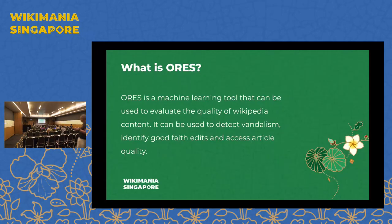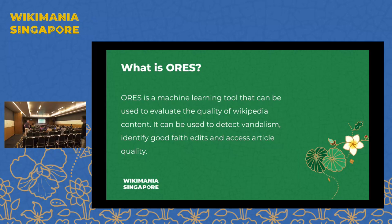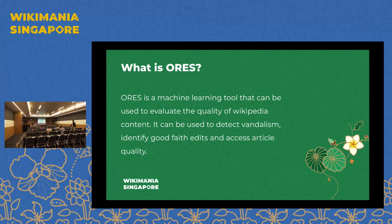For people who are new to machine learning tools with regards to content quality and improving content quality on a Wikimedia project: ORES is basically a machine learning tool that helps to improve the content quality on Wikipedia and other Wikimedia projects. It helps contributors to detect vandalism, identify good edits, and assess quality articles.